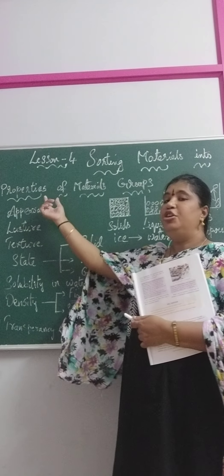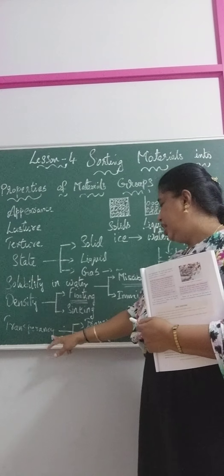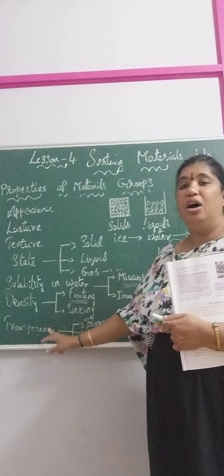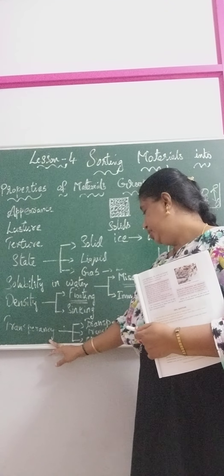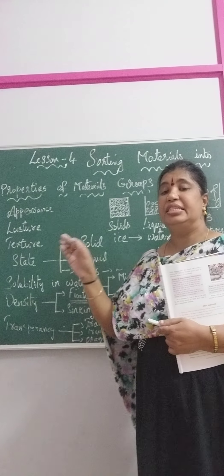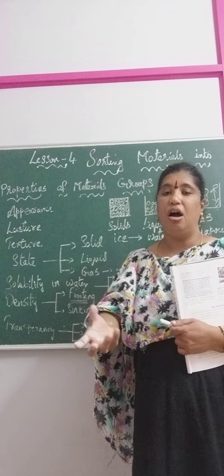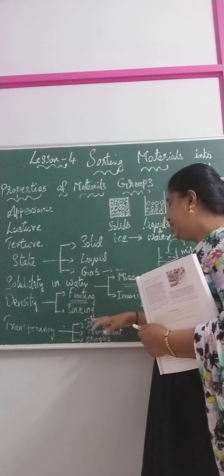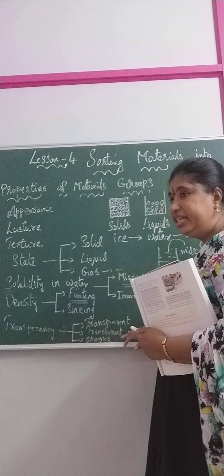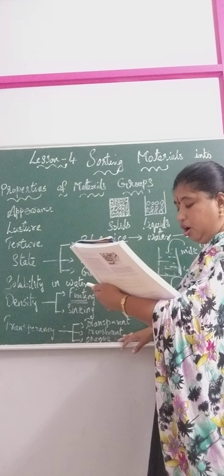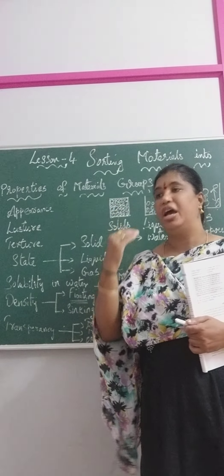So density becomes one of the properties of materials. Now the next and last one is transparency — how the materials are divided through transparency. Transparency is nothing but the way how we view, the way how we look at the object. Transparency is again divided into three types: transparent, translucent, and opaque objects — depending on how light passes through them.